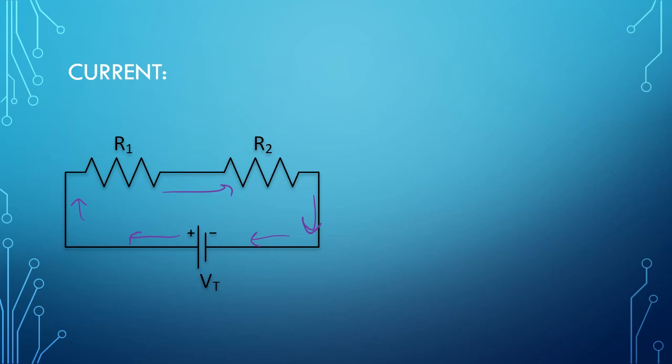For this reason, current through all circuit elements is the same. Therefore, total current is equal to current through first resistor and the second resistor.